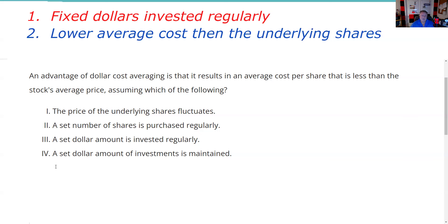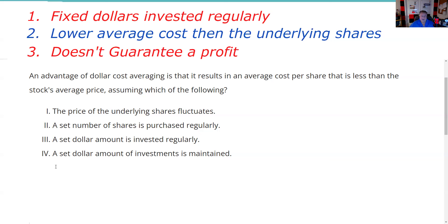Our final test question about dollar cost averaging is it doesn't guarantee a profit. There are two nasty words in the securities industry we never use: 'guarantee' and 'prove.' We just don't say those kinds of things. If you want to hear the word guarantee, you need to talk to a banker about a banking product or an insurance agent about insurance products. Securities products have no guarantee.